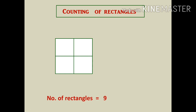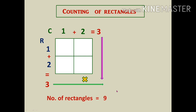For the tricky way, count rows and columns and write the numbers in a series. For rows: 1, 2. For columns: 1, 2. Add the row series: 1 + 2 = 3. Add the column series: 1 + 2 = 3. Multiply both results: 3 × 3 = 9. The total number of rectangles is 9. The steps are: write numbers in the series, add them, then multiply.